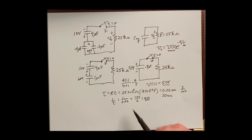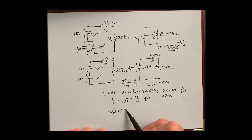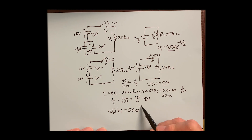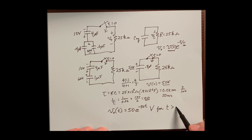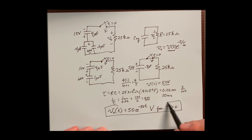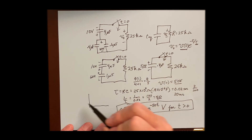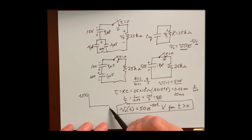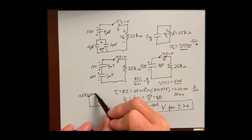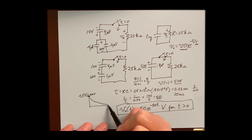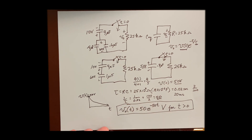The voltage across the resistor as a function of time is V(t) equals 50 times e to the negative 50t volts, for t greater than zero. Plotting V(t) versus t: it starts at 50 volts and decays exponentially toward zero in the limit. It's a decaying exponential. That's the answer for this problem.